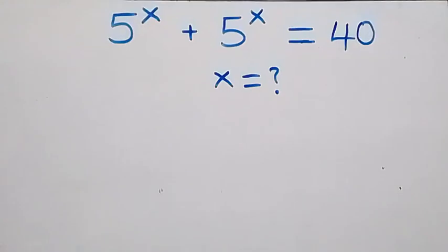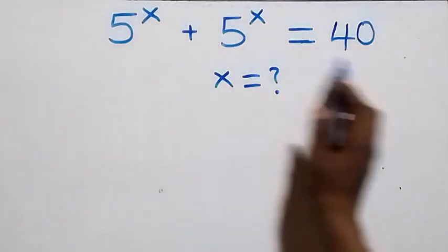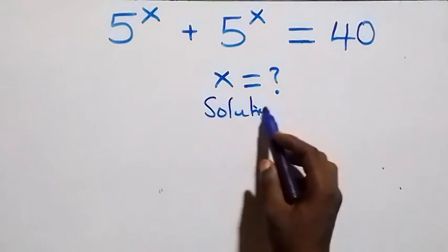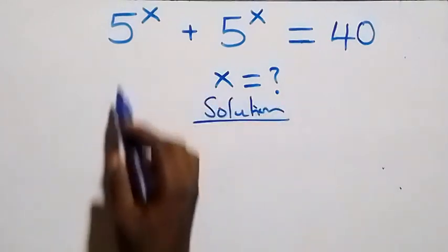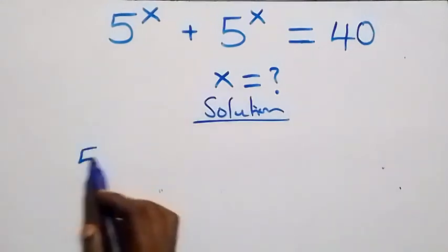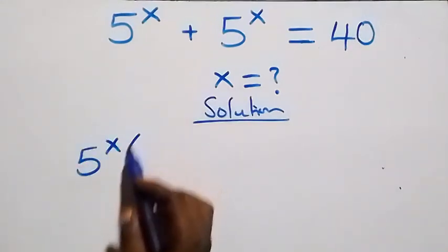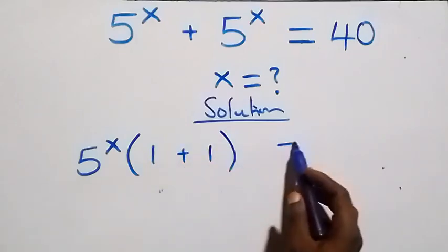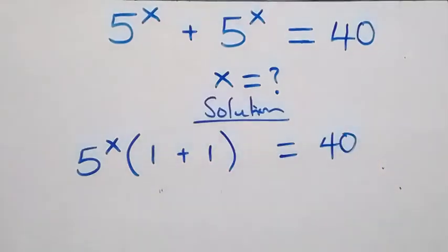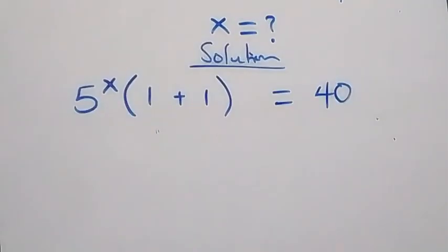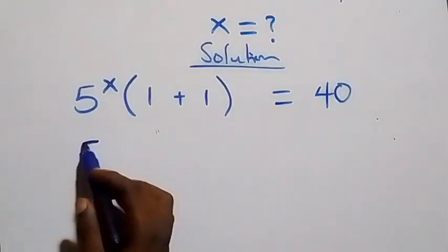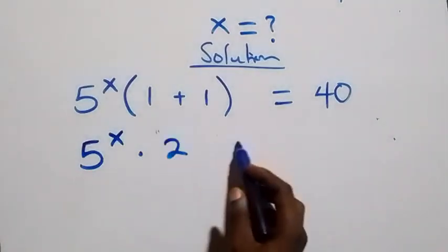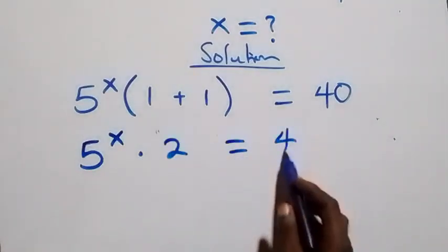Hello, you're welcome. Here's how to solve this equation. We factor 5 raised to the power x out, and we have one plus one, which equals 40. This becomes 5 raised to the power x times two, equals 40.